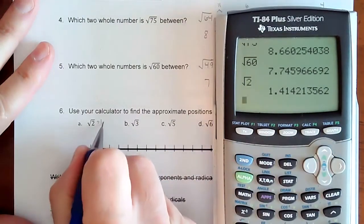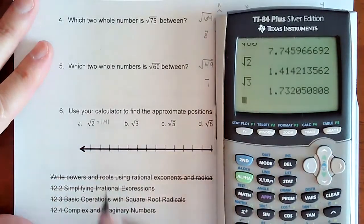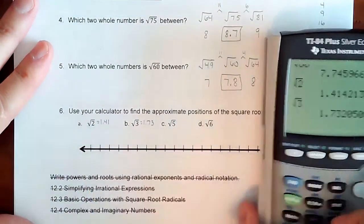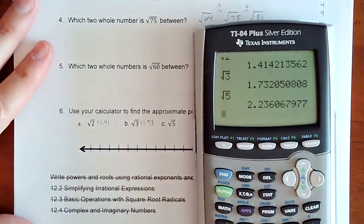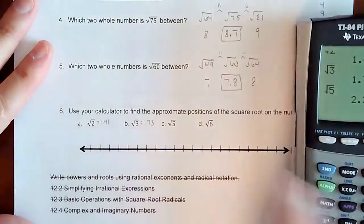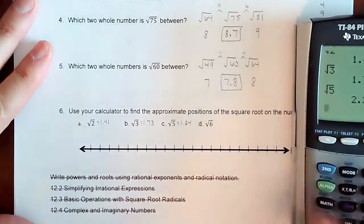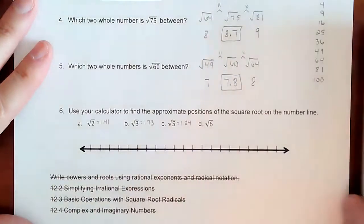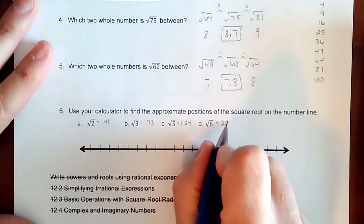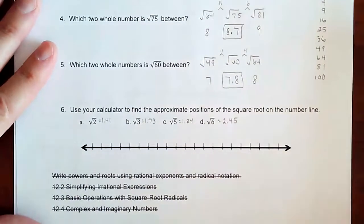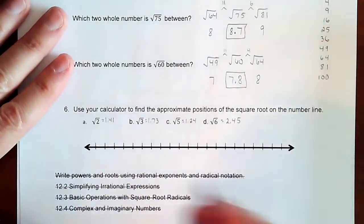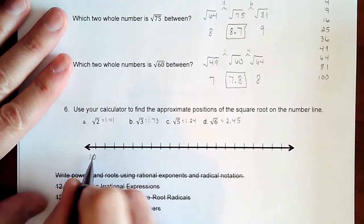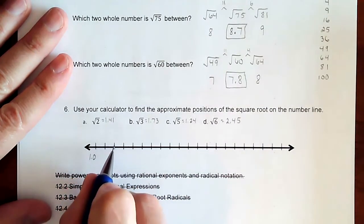So this thing is about 1.41. Square root of 3 is about 1.73. Square root of 5 is 2.24. And the square root of 6 is about 2.45. So here's the reason why I'm going out to the two decimals. I got all these different numbers and I have a bunch of decimals. So I'm going to start with my scale at 1.0.